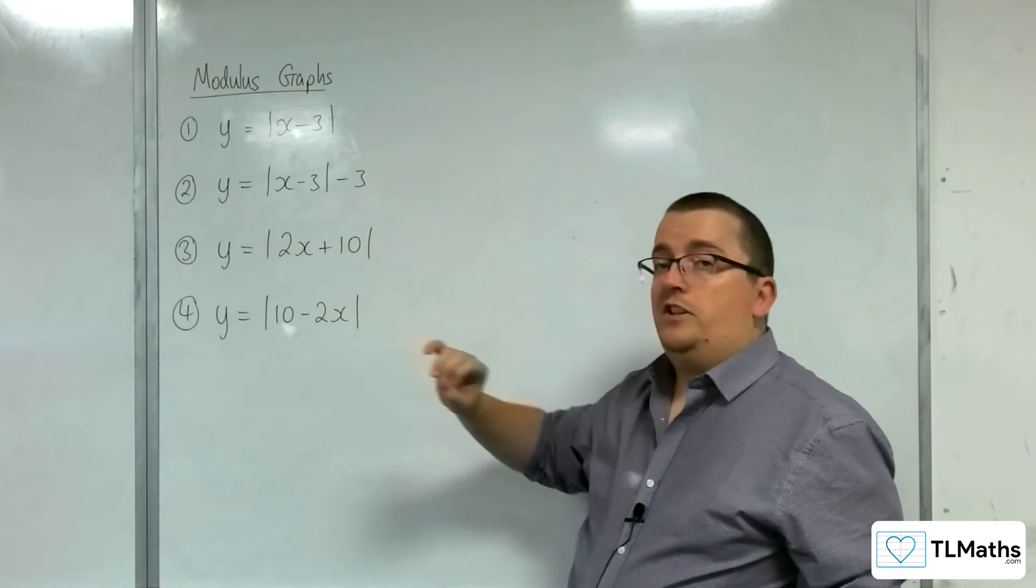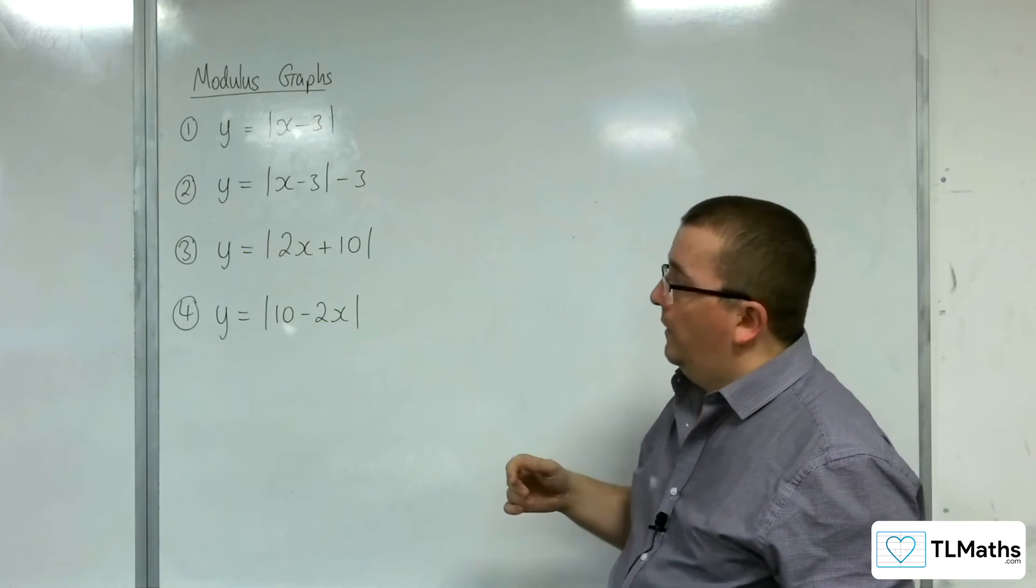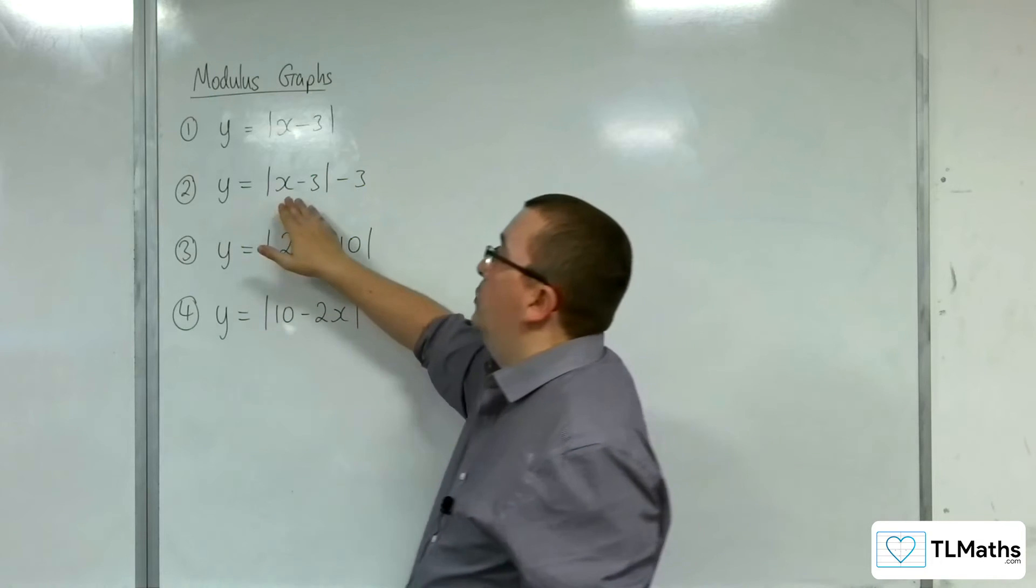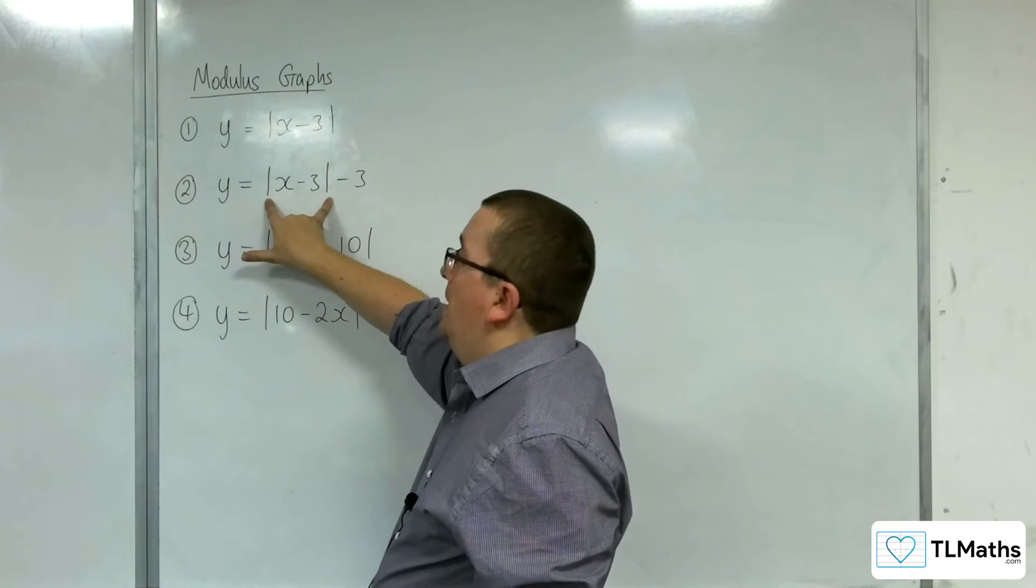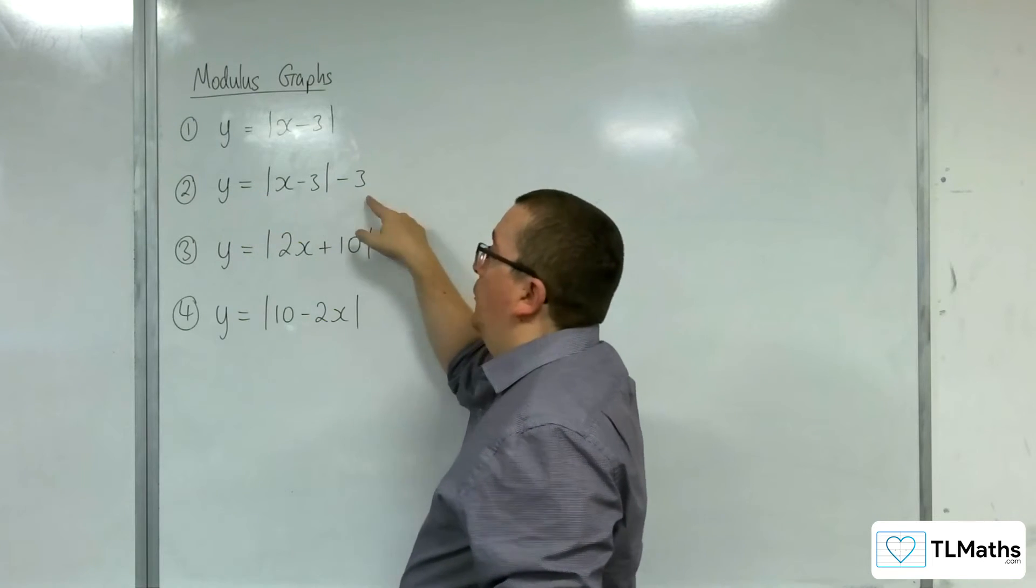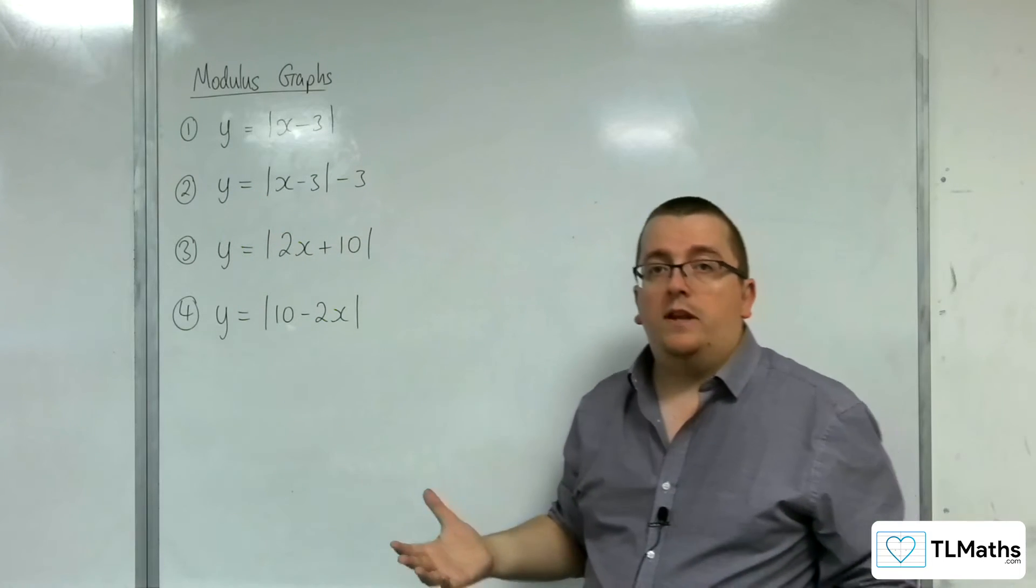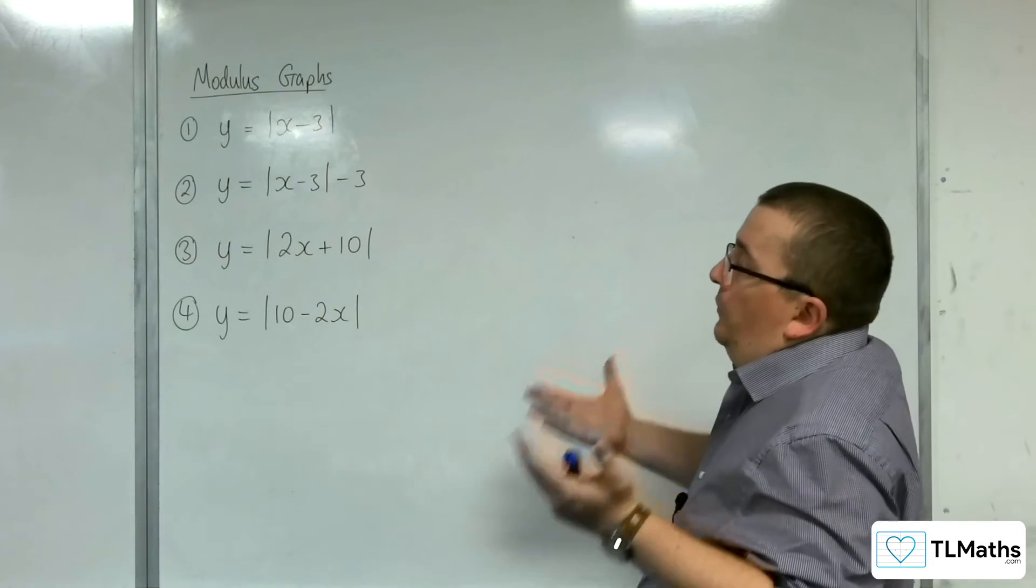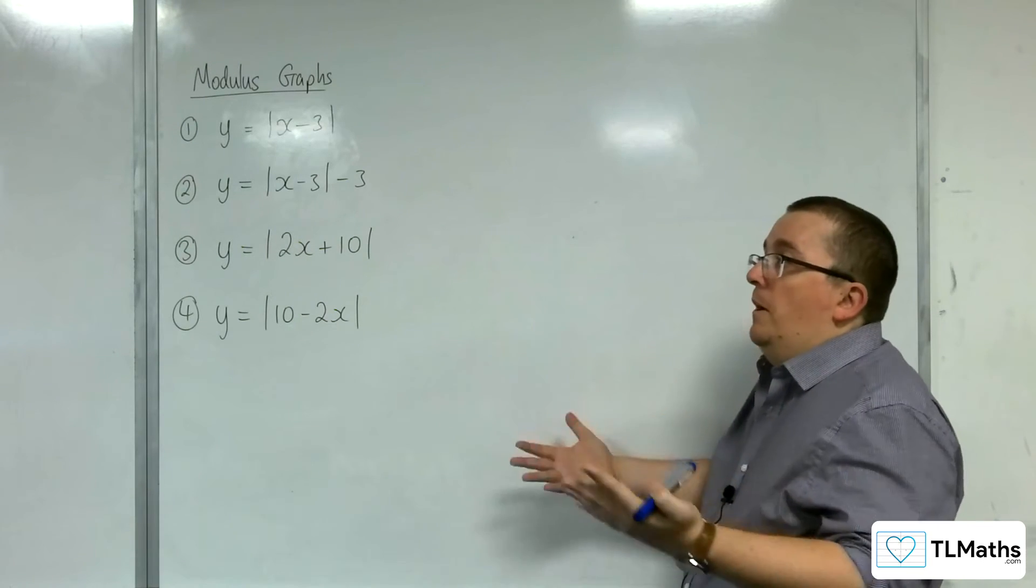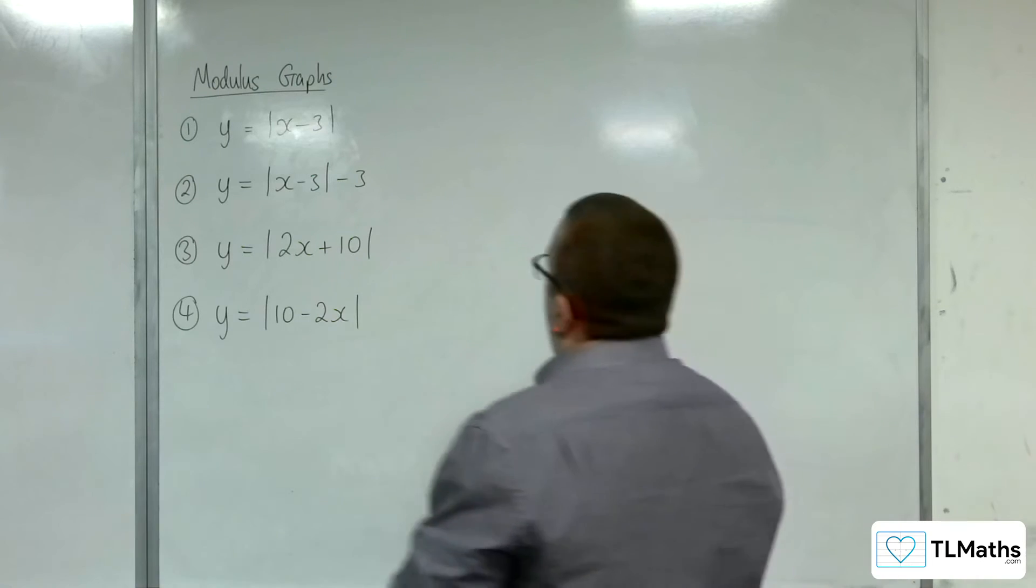And this is precisely right for the modulus graph as well. Because when x is 3, this modulus part is 0, which means that the y value must be greater than or equal to -3 for all values of x, or real values of x. So that makes sense that (3, -3) is the lowest part of the graph, and hence the vertex.